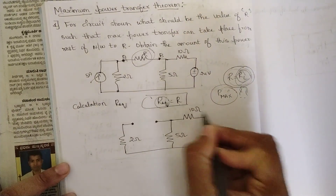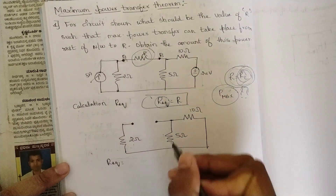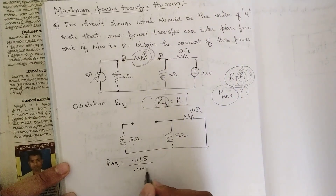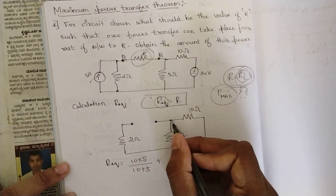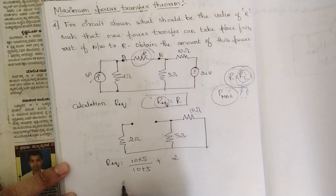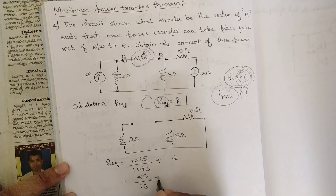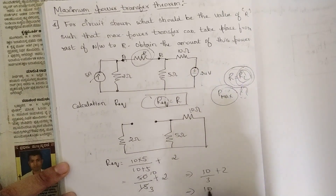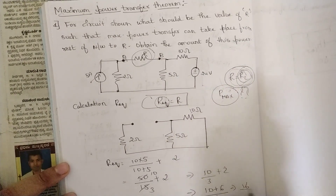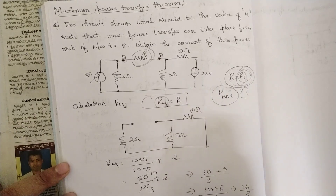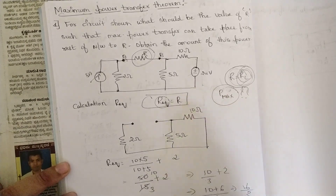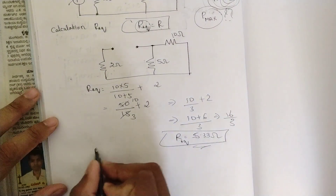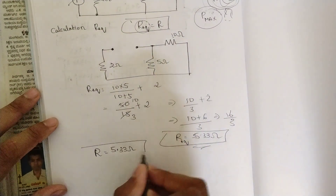Now we find R_equivalent. The 10 ohm and 5 ohm resistors are in parallel: (10 × 5) / (10 + 5) = 50/15 = 10/3 ohms. This combination is in series with the 2 ohm resistor, giving R_eq = 10/3 + 2 = 16/3 ≈ 5.33 ohms. Since R_equivalent equals R, the value of R is 5.33 ohms.